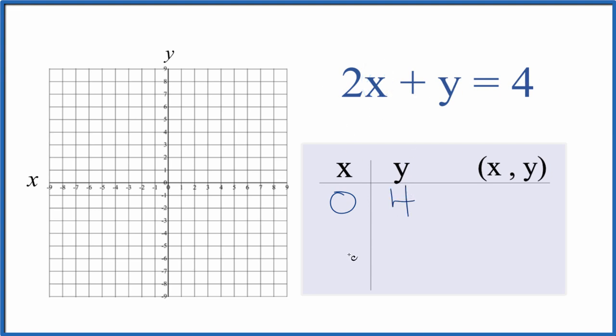And we could use any values for x and the value for y. That point would be on our graph. But let's just choose 1. 2 times 1 is 2. So 2 plus y equals 4. Let's subtract 2 from both sides. So that just gives us y by itself. y equals 4 minus 2. So that's just 2.